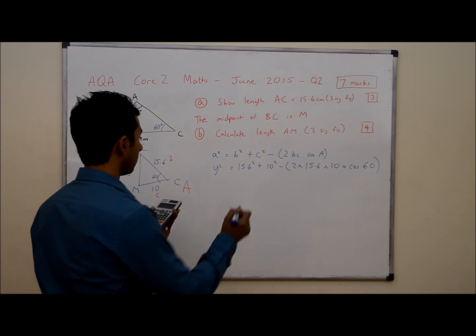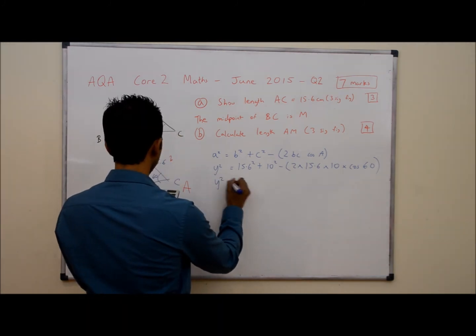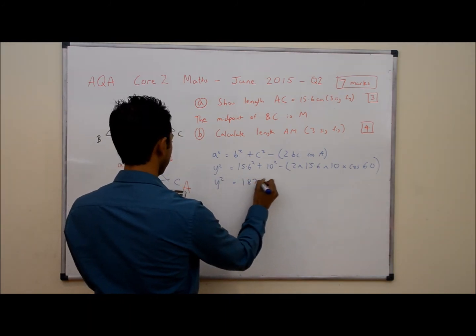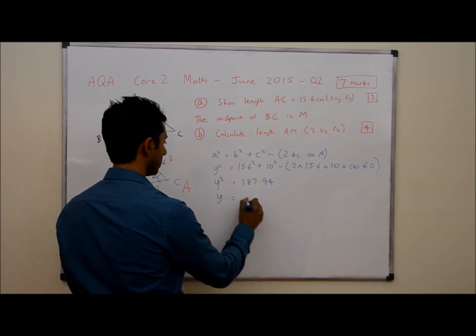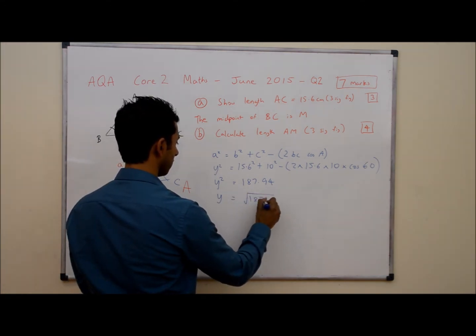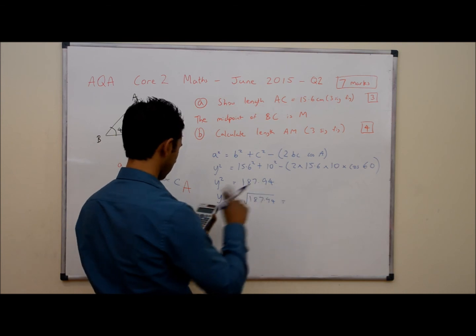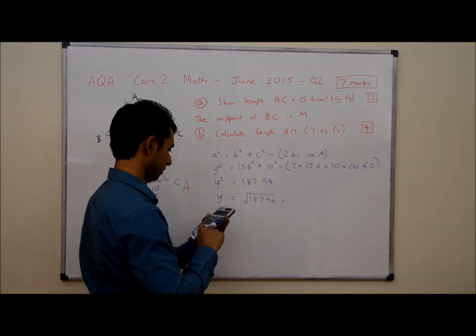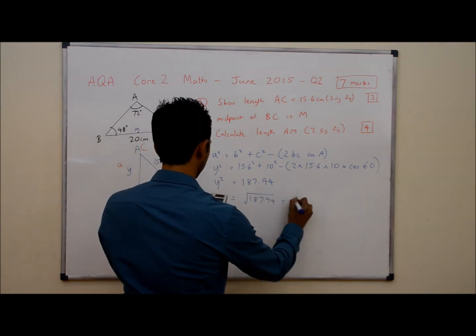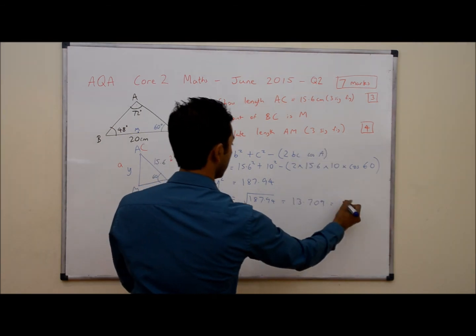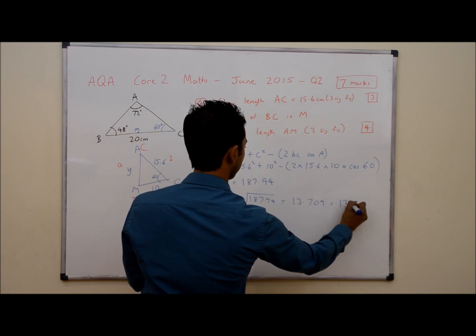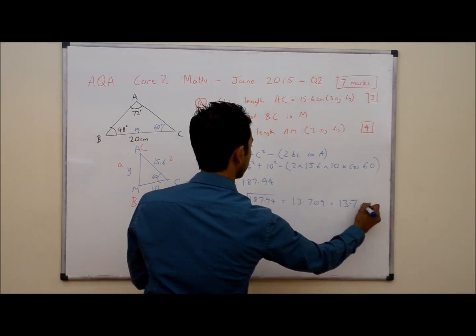So the answer I'm getting is Y squared is equal to 187.94. So in order to get Y, I'll just need to square root this. So I get 13.709. So to three significant figures, this would be 13.7 centimeters.